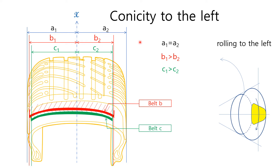On the other hand, what happens in the opposite case? As before, the center lines of belts don't coincide with the longitudinal center line of tire geometry, but this time B1 is bigger than B2 for belt B, and C1 is bigger than C2 for belt C. In this case, total stiffness of part A1 is larger than part A2 because the belts are located more to the left with respect to the longitudinal center line. Therefore, the left half of tire stiffness is bigger than the right half. Consequently, the tire shapes like a cone and ends up rolling to the left.